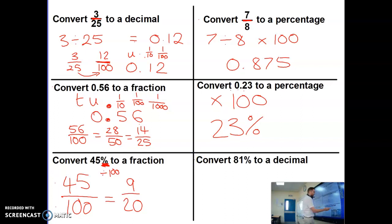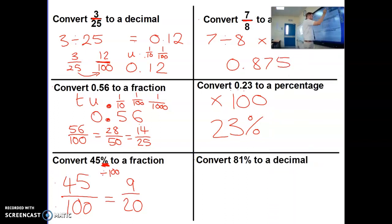Right, final one. Let's convert 81% to a decimal. Well, 81% as a decimal, we're just going to divide by 100. So we go, 81 divided by 100 is 0.81.